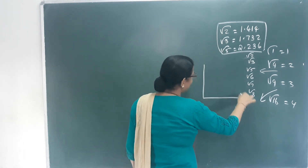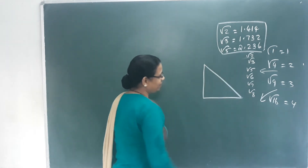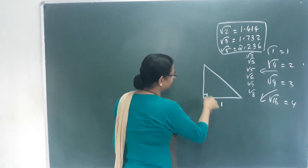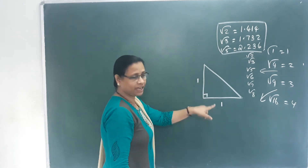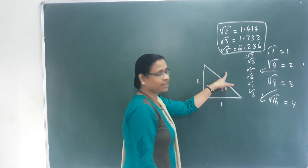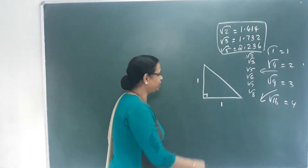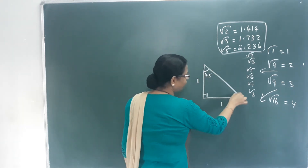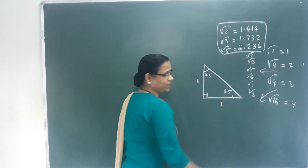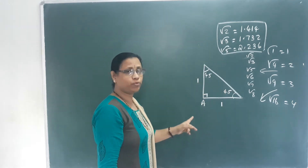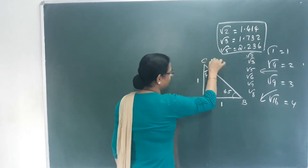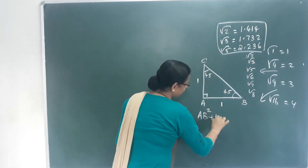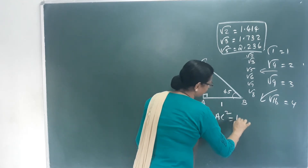It's a right-angle triangle — an isosceles triangle. If we have one unit on this side and one unit on this side, we can study the third side. This is an isosceles triangle with a 90-degree angle. This is 45 and this is 45. So we use the Pythagorean theorem: a, b, c. AB square plus AC square is equal to BC square.